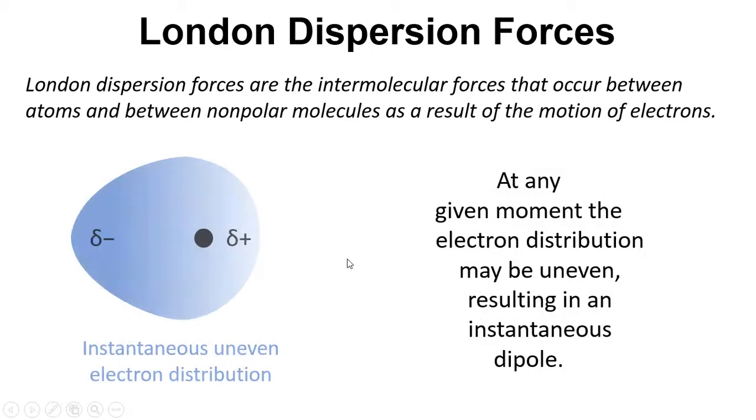Now it is possible that the electrons move around and there's motion and we might get this instantaneous uneven electron distribution. So again we've got the nucleus but now the electron density is unevenly distributed and we get this instantaneous dipole.